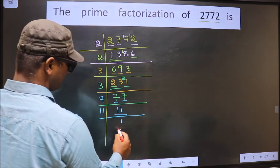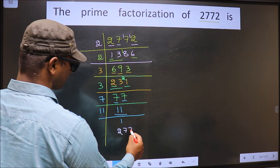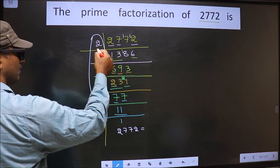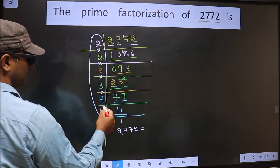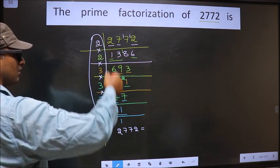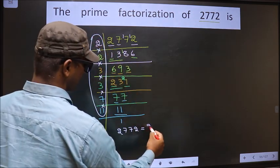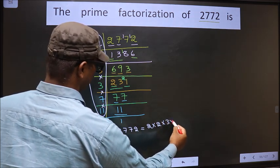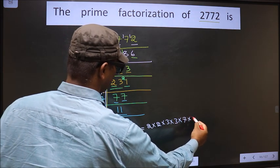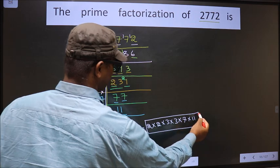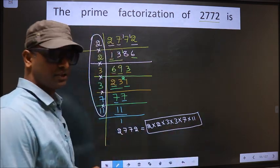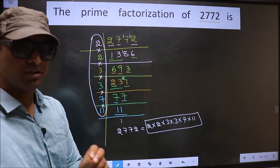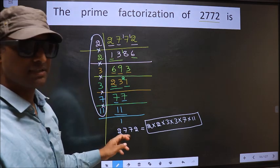So the prime factorization of 2772 is the product of these numbers — that is 2 × 2 × 3 × 3 × 7 × 11. This is the prime factorization of 2772, also called the product of prime numbers of 2772.